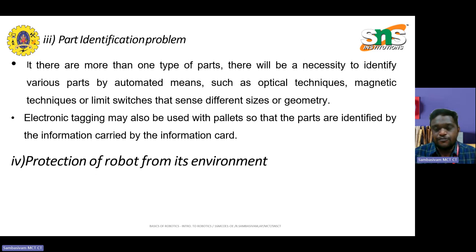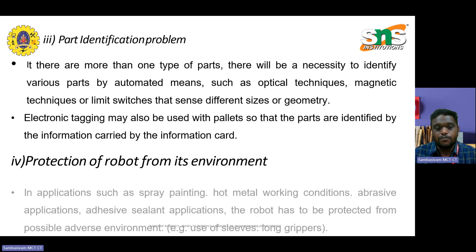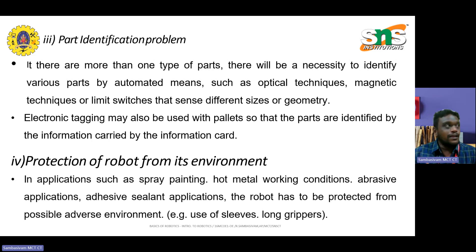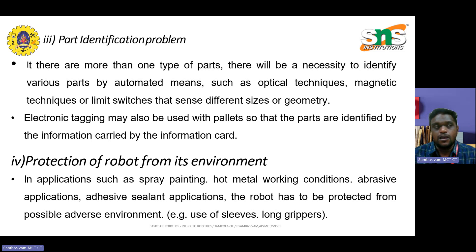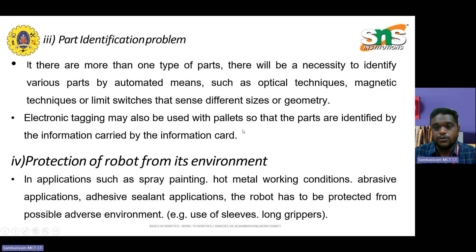Regarding protection of the robot from its environment: normally the robot has to be protected from the environment in various applications such as spray painting, hot metal working conditions, abrasive applications, and adhesive sealant applications. The robot must be protected from possible adverse environments. For example, by using sleeves or long grippers, this can protect the robot from its environment.